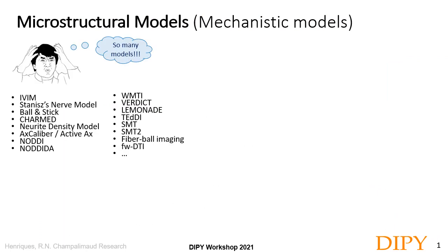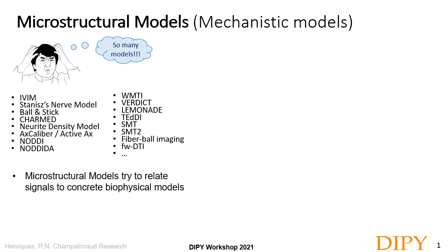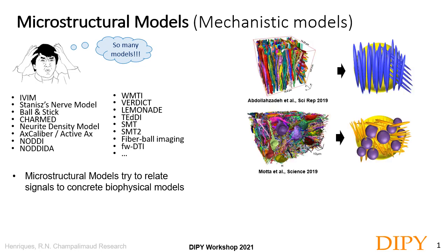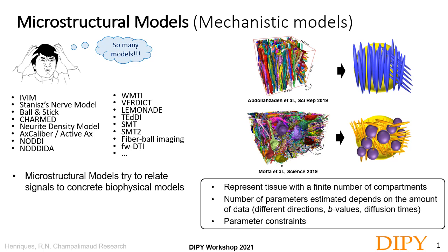If you look at the literature, you will see that several models have been proposed. However, all these models have common aspects. In contrast to DTI and DKI, microstructure models try to relate diffusion MRI signals to concrete biophysical models. This is done by representing tissue with a sketch of relevant features by a finite number of compartments. The number of parameters the model can properly estimate depends on the amount of data available, and to reduce data requirements, it is common to impose fixed parameters in microstructure models.